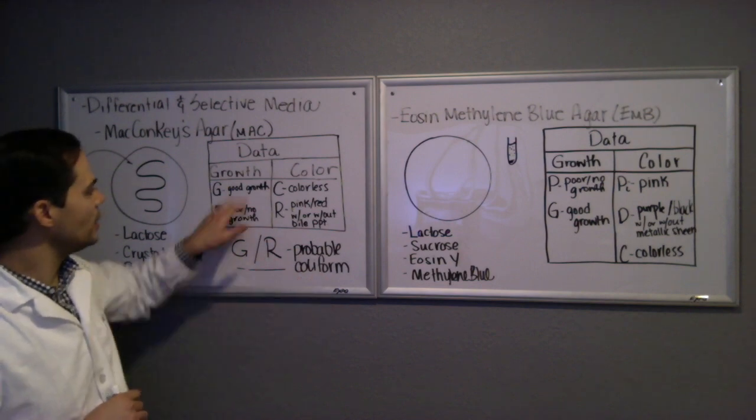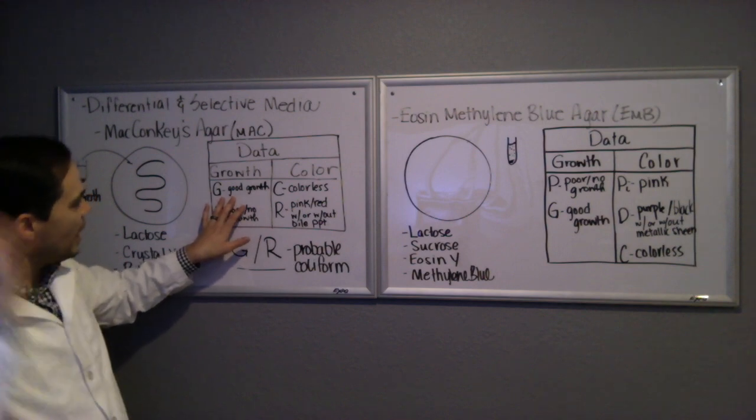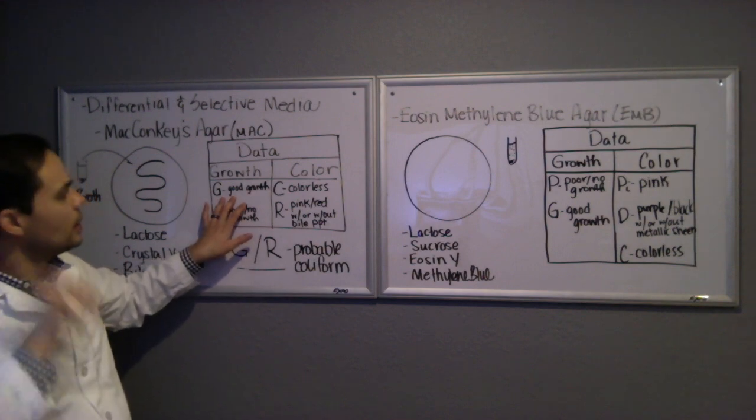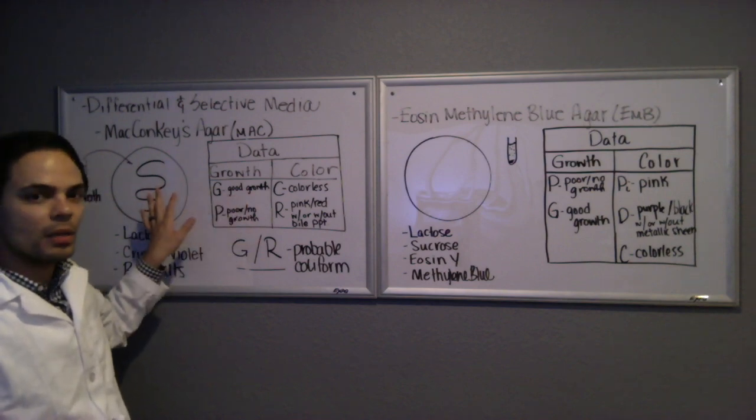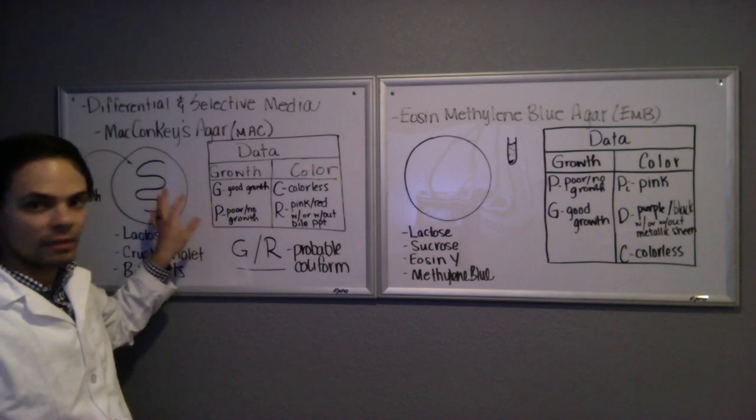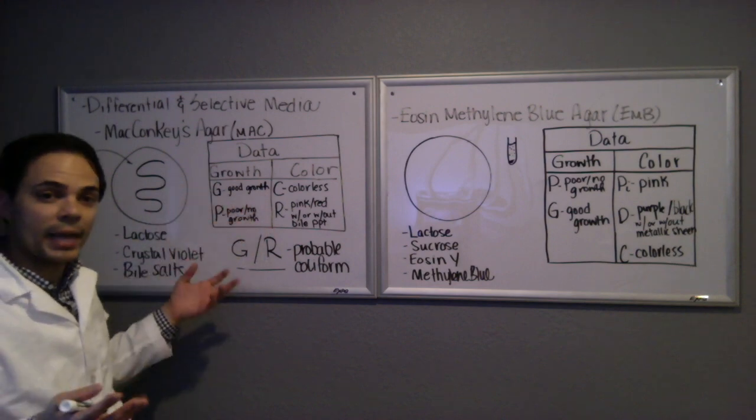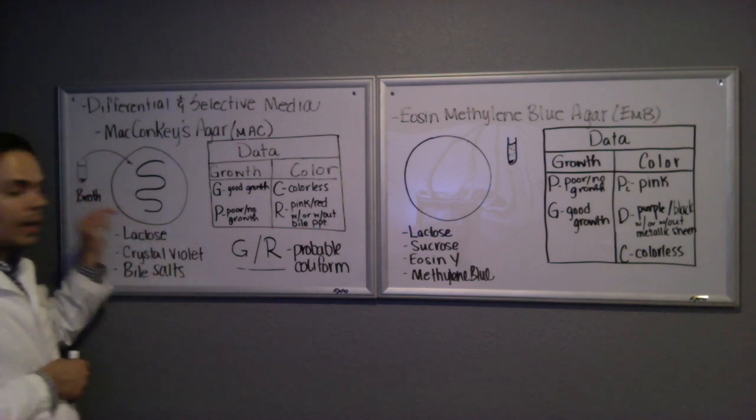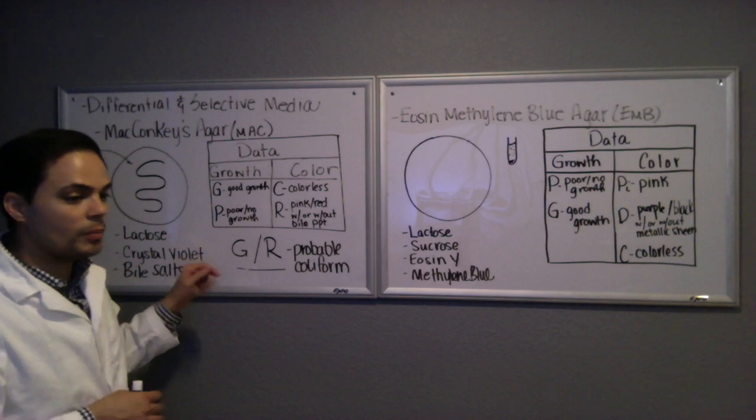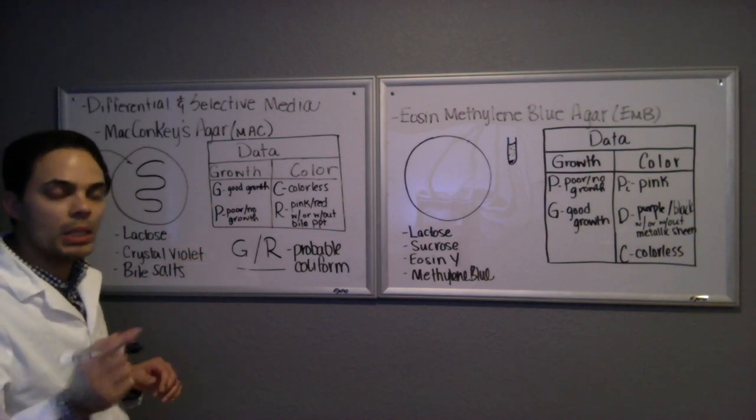If you did not have good growth, then it's most likely not even a gram negative. Because remember, this medium is selected for gram negatives. So if it didn't grow, it's probably gram positive, which you can check doing a gram stain. You could take some of this and do a gram stain and check out to see what the shape and arrangement of that bacterium is, as well as the gram reaction.